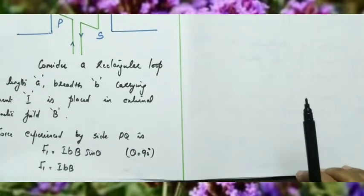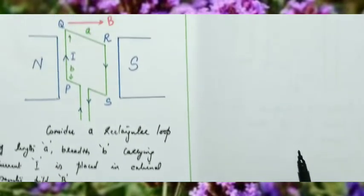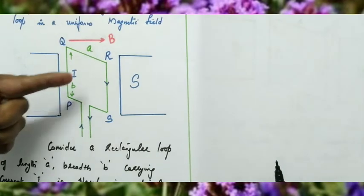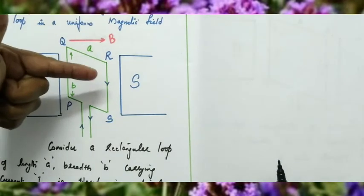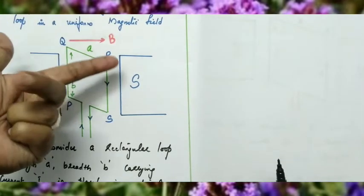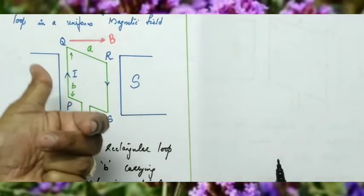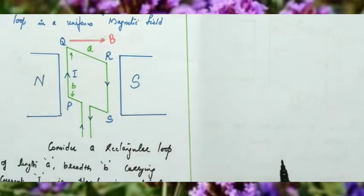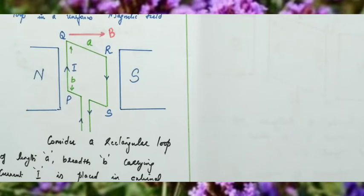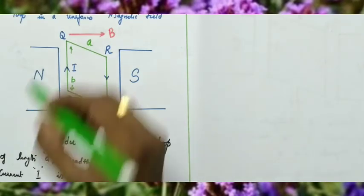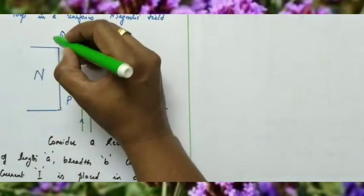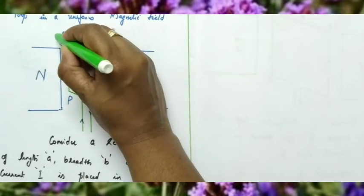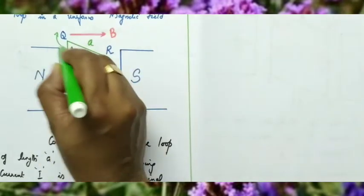From Fleming's left hand rule: the magnetic field is towards the right, the current is in the upward direction, so the force is into the plane. Side PQ experiences a normal inward force, which we represent in the figure as directed inward.